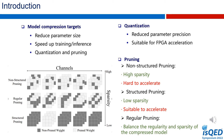Non-structured pruning is a weight-level method which has high flexibility and can bring a large compression ratio to the network, but its irregular sparsity is difficult to accelerate. Structured pruning is usually formed in the convolutional kernel or channel dimension, which is easy to accelerate by the computing architecture. However, due to the strict requirements for sparse patterns, it is difficult to reach a large pruning ratio. Compared with structured pruning, regular pruning is relatively mild in the selection of pruning objects, which can balance the regularity and sparsity of the compressed model.